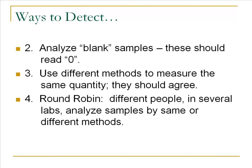Number four is what we call round robin — different people in several labs analyzing samples by the same and different methods. I may have multiple people doing the same experiment in my lab, and also call a laboratory across the country to perform the same method with different personnel. We then combine that data and look at it — hopefully it's telling us the same thing. If not, we have to figure out where the problem is.